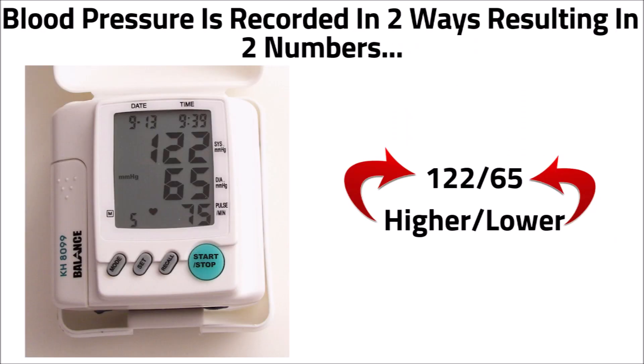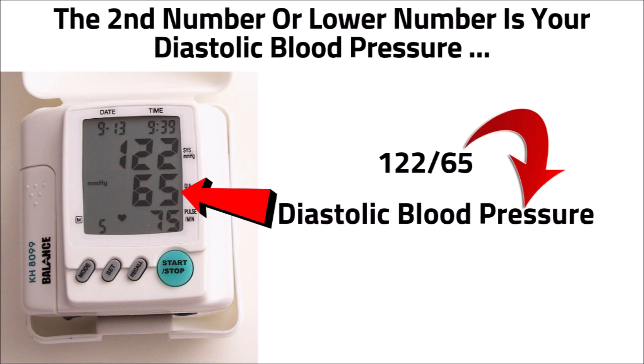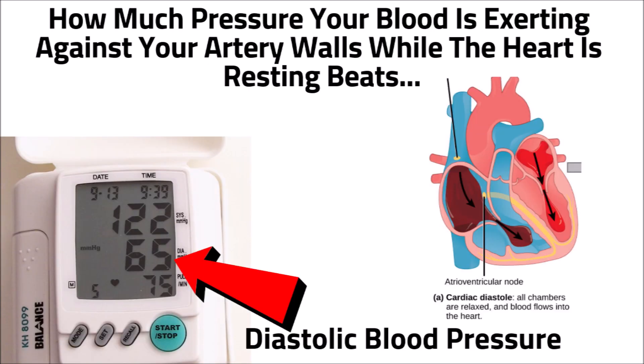Blood pressure is recorded in two ways, resulting in two numbers: the higher number and the lower number. The second number, or lower number, is your diastolic blood pressure. This number indicates how much pressure your blood is exerting against your artery walls while the heart is resting between beats, refilling with blood.